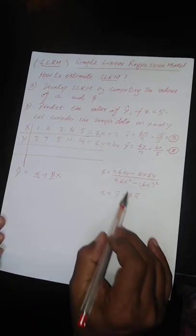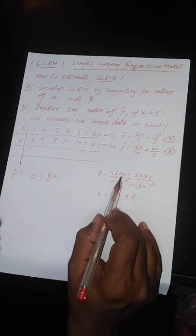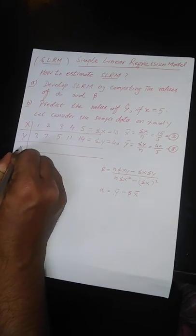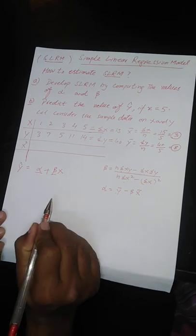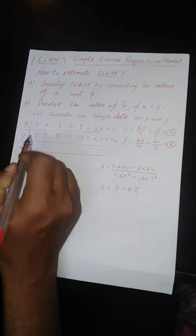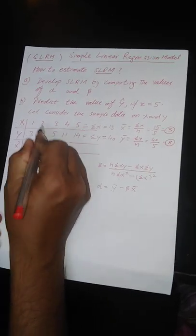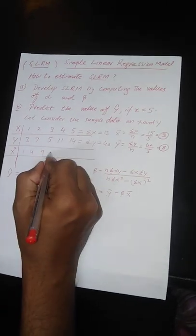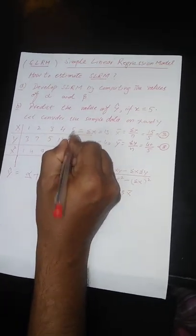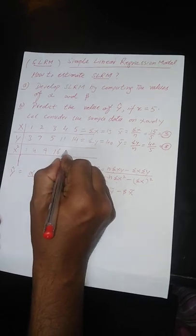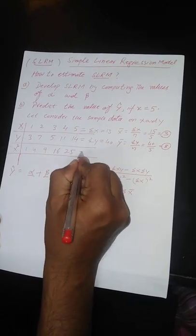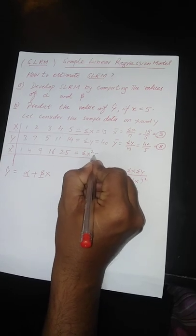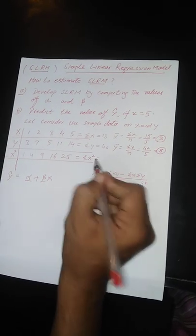Now we require x, y, and x squared. First, we calculate x squared from x. Square of 1 is 1, square of 2 is 4, square of 3 is 9, square of 4 is 16, and square of 5 is 25. The sum — summation x squared — is equal to 55.